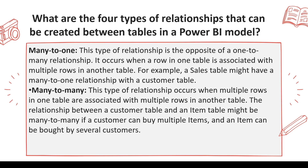Then comes many-to-many. This type of relationship occurs when multiple rows of one table are associated with multiple rows of another table — there is no uniqueness on either side. For example, item ID is repeating in the sales table and also repeating in the purchase table, creating a many-to-many relationship. Ideally we don't prefer this, but there are cases like row-level security (RLS) where we do create a many-to-many relationship.